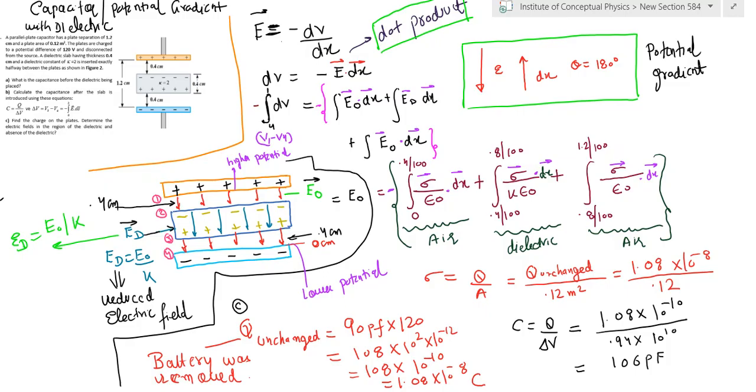Sigma is equal to q upon A. Charge will remain the same because the battery was disconnected and then the dielectric was introduced. One more concept, charge conservation, has to be used. This has been calculated as 1.08 into 10 raised to power minus 8.